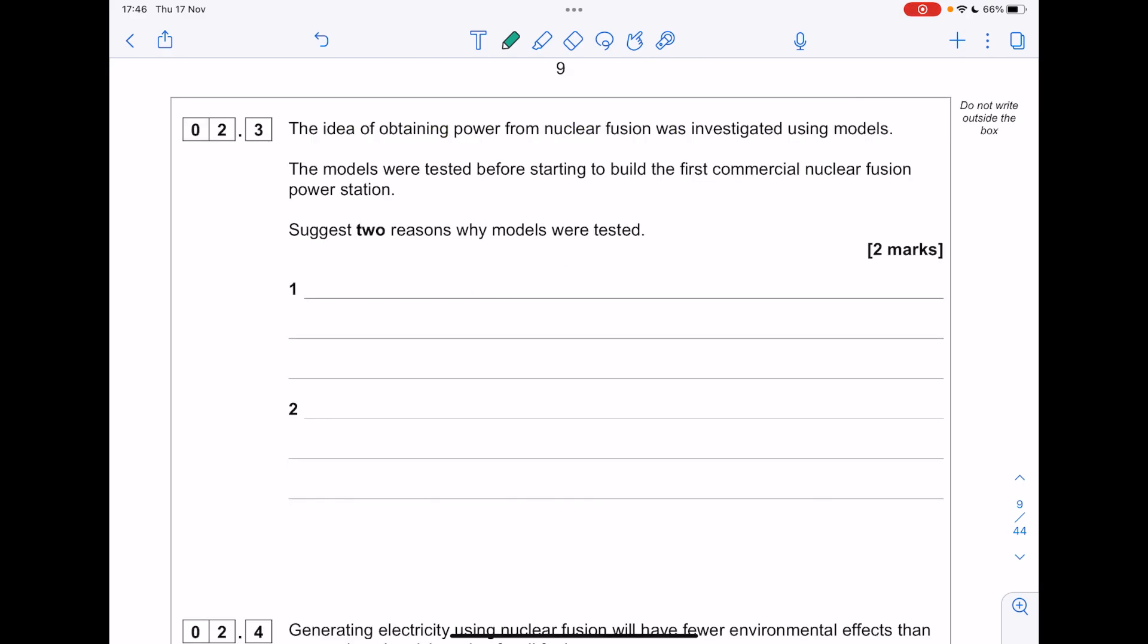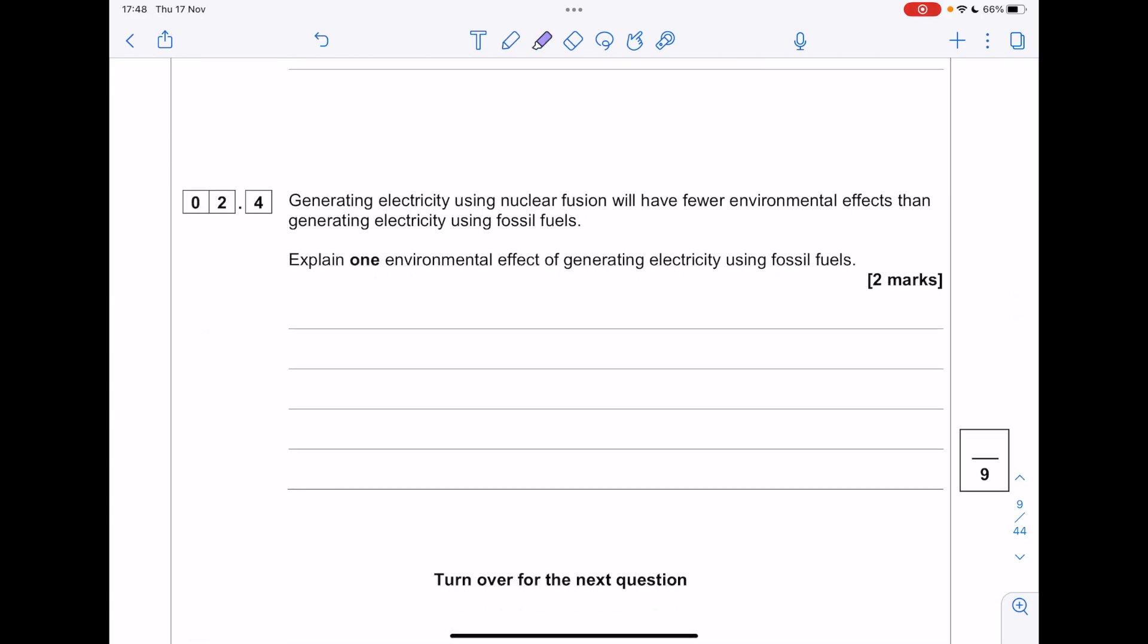The idea of obtaining power from nuclear fusion was investigated using models. The models were tested before starting to build the first commercial nuclear fusion power station. Suggest two reasons why models were tested. First of all, it's going to be so much cheaper to make these small scale models as opposed to the real thing. Using models allows you to assess safety risk, environmental impact, and check that the fusion process is going to be possible.